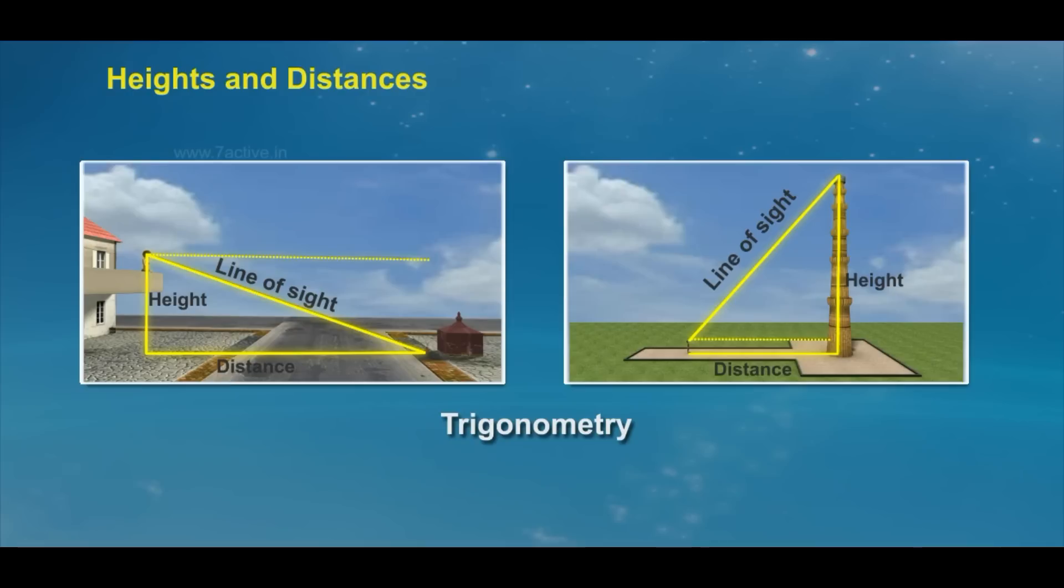The line of sight is the line drawn from the eye of an observer to the point in the object viewed by the observer.